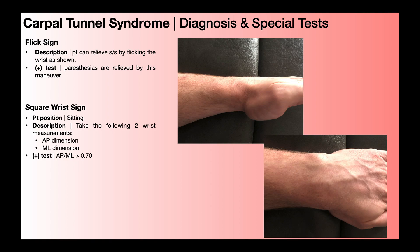Last is the square wrist sign. With two wrist images — a side view from anterior to posterior, and a top-down view from medial to lateral — the patient sits with their arm resting on a table. You take two measurements: first the AP dimension, measuring from anterior to posterior at the wrist crease; then the medial-to-lateral dimension.